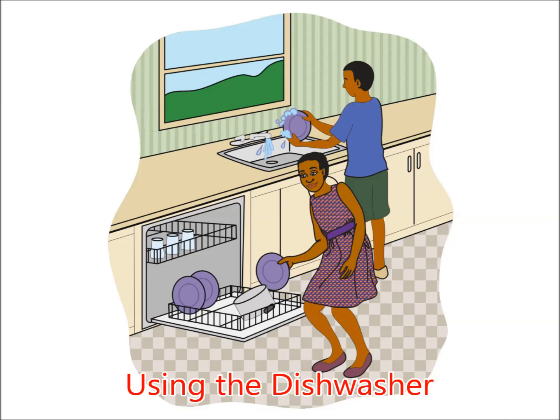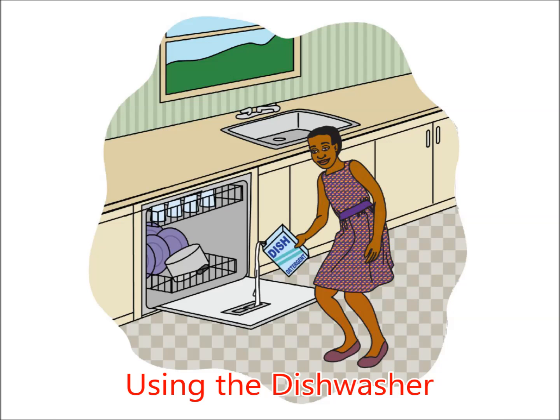Using the dishwasher. A dishwasher kills germs on dishes and silverware. It does not scrub dishes or take the place of a garbage disposal. Always put food scraps into the garbage and rinse the dishes before putting them into the dishwasher. You must use a special soap designed for the dishwasher. Never use liquid hand soap or laundry detergent in the dishwasher.